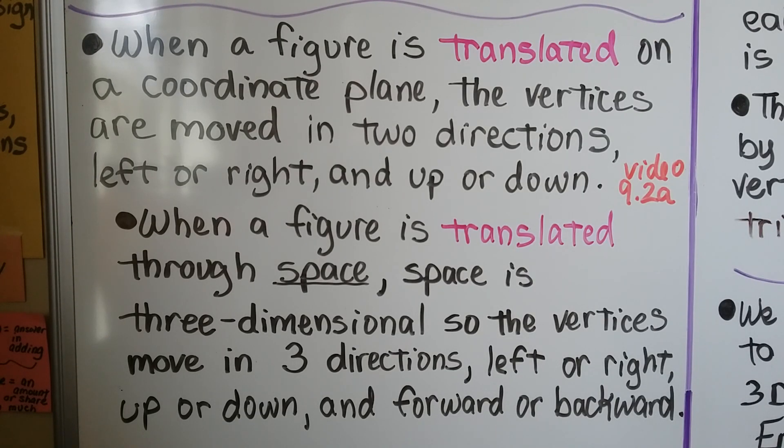When a figure is translated on a coordinate plane, the vertices are moved in two directions, left or right and up and down. We talked about translations back in 9.2a. When a figure is translated through space, space is three-dimensional, so the vertices move in three directions: left or right, up or down, and forward or backward.